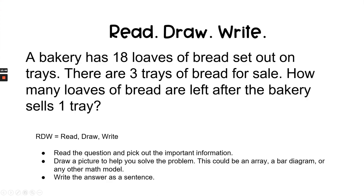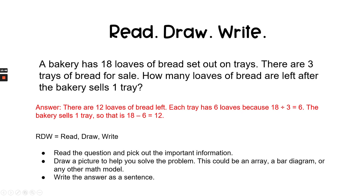Let's check our answer. Answer: there are 12 loaves of bread left. Each tray has 6 loaves because 18 divided by 3 equals 6. The bakery sells one tray, so that is 18 minus 6 equals 12.